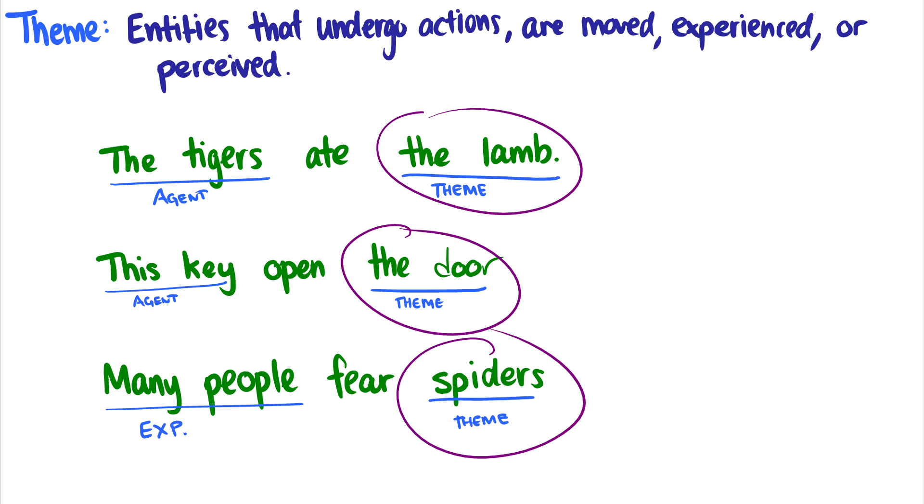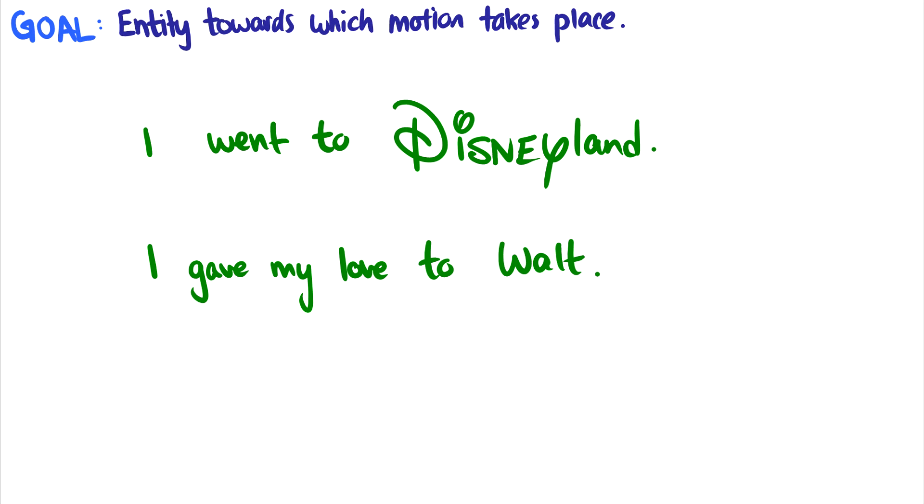In passive constructions, things might change a little bit, but we'll get there when we come to it. Another one is goal. I went to Disneyland. To Disneyland. This is the goal. That's where we want to go. It's an entity towards which motion takes place. Or I gave my love to Walt. Well, Walt is the receiver of the goal, or of the love. You know, you want to give your love to him. So the goal is to give the love to Walt.